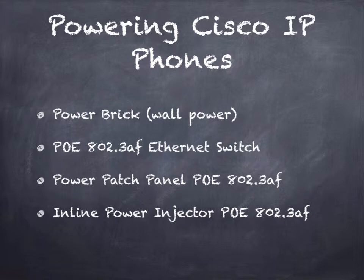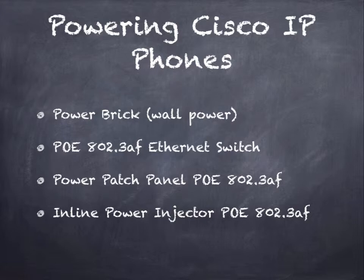You could also purchase patch panels that are POE. The patch panel plugs into a 110 outlet and injects power over Ethernet into the Ethernet cable after it leaves the switch. The advantage is if you already own an Ethernet switch that is not POE, you can purchase a patch panel to add that capability. If you don't need POE on all 24 or 48 ports, you might find it more cost-effective to buy an inline power injector, which is the same idea but powers only a single Ethernet port.